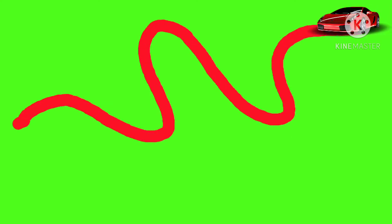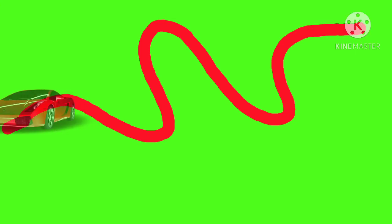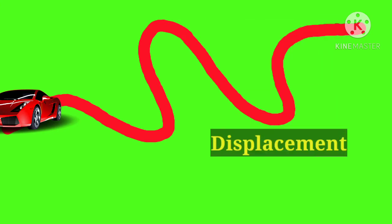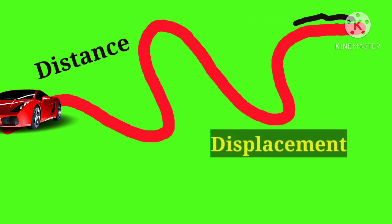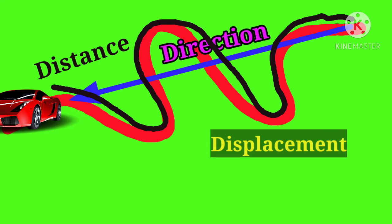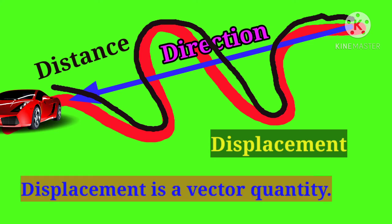The minimum distance traversed by a moving body in one direction from the original point to reach the final point is called displacement. In displacement, both distance and direction are taken into account; therefore, displacement is a vector quantity.